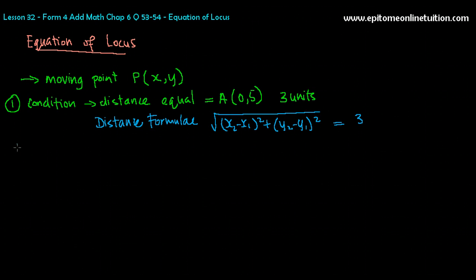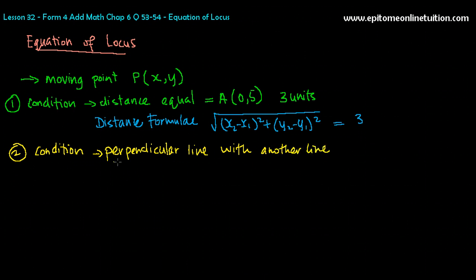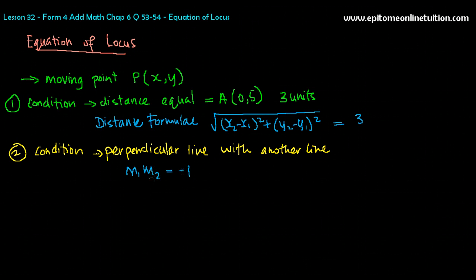You do have a second condition. Sometimes they will give you a condition such that the locus of this moving point P forms a perpendicular line with another line formed by a point. In this case, when the condition says the moving point P has a locus and it forms a perpendicular line with another line, then you will have to form your equation based on the perpendicular line formula, which is M1 × M2 equals negative 1. So in general, these two are the conditions for forming equations of locus. You use only these two formulas in general for SPM.